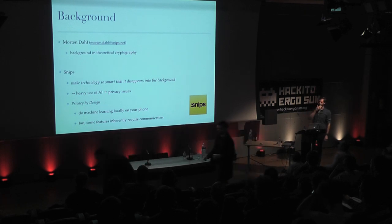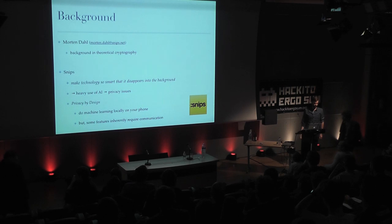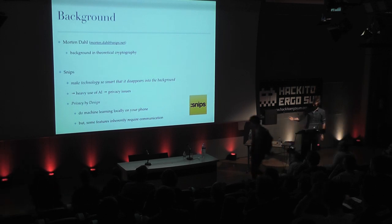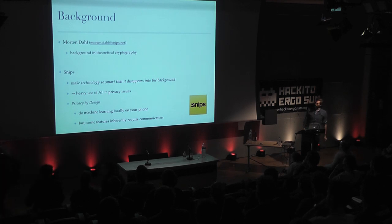Because of that, there's been a policy that everything has to be privacy by design. The approach so far has been to do machine learning locally on the device — on your phone — because that trivially implies privacy guarantees. But of course, there are some features that inherently require some kind of communication, and for these features we can look at modern cryptographic primitives to achieve that.